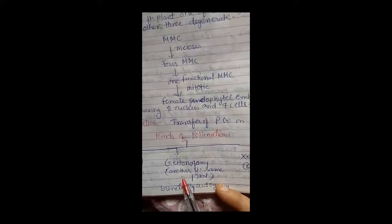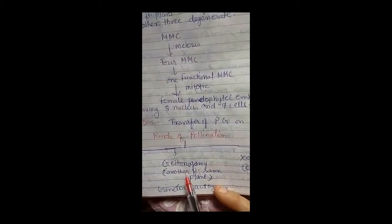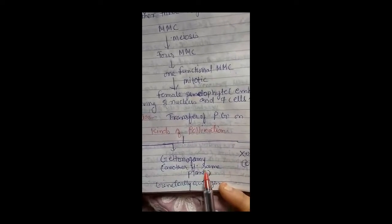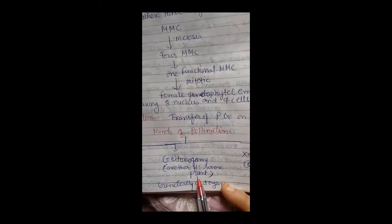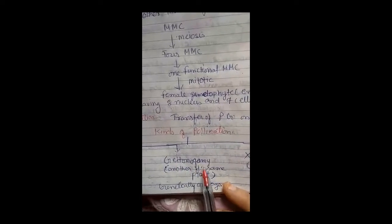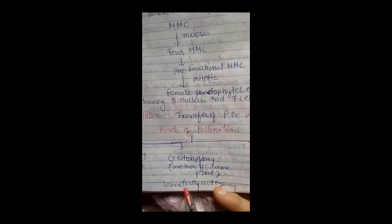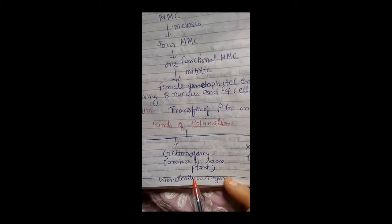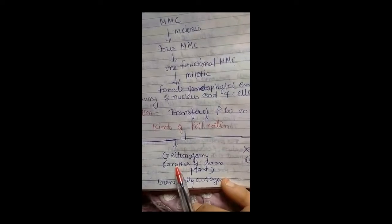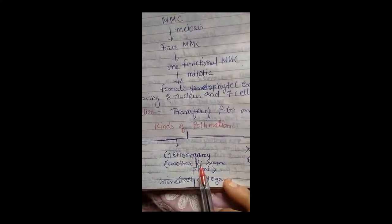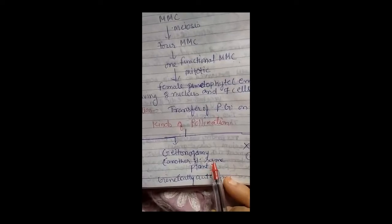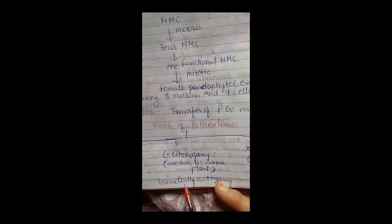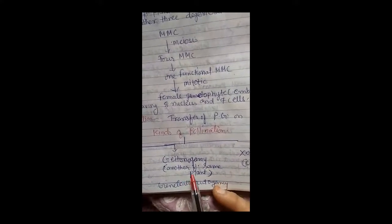Geitonogamy is when the pollen grain of one flower transfers to the stigma of another flower of the same plant. That means functionally, geitonogamy is cross-pollination, but genetically it is autogamy — because the genes are the same. The pollen grain of the same plant transfers to the stigma of another flower of the same plant, so genes are the same. That's why it is considered autogamy.